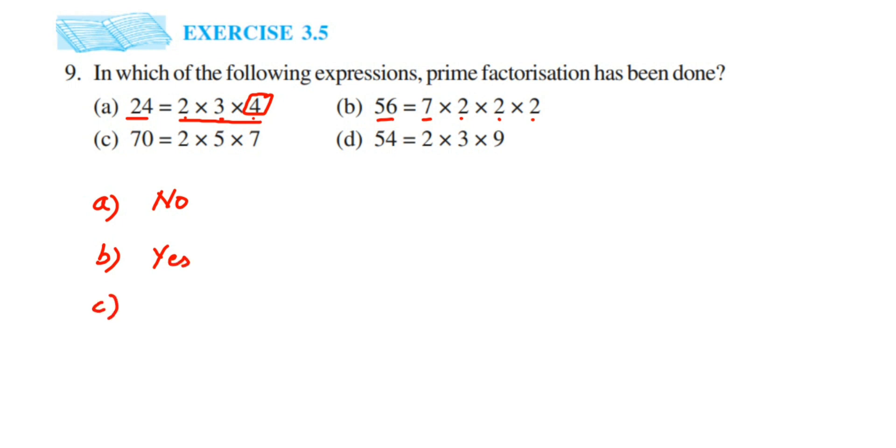Then the next one: 70, so 2 into 5 into 7. 2, 5, 7 are prime numbers, so the answer will be yes.